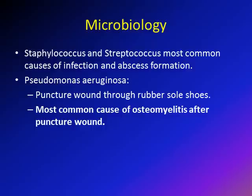Regarding microbiology, Staph and Strep are the most common causes of infection and abscess formation because these organisms are on our skin. Pseudomonas aeruginosa is very important, especially when the puncture wound occurred through rubber sole shoes like tennis shoes. Pseudomonas is also the most common cause of osteomyelitis after pedal puncture wounds. So the most common cause of infection is Staph/Strep, but if infection reaches the bone causing osteomyelitis, the most common organism is Pseudomonas aeruginosa.